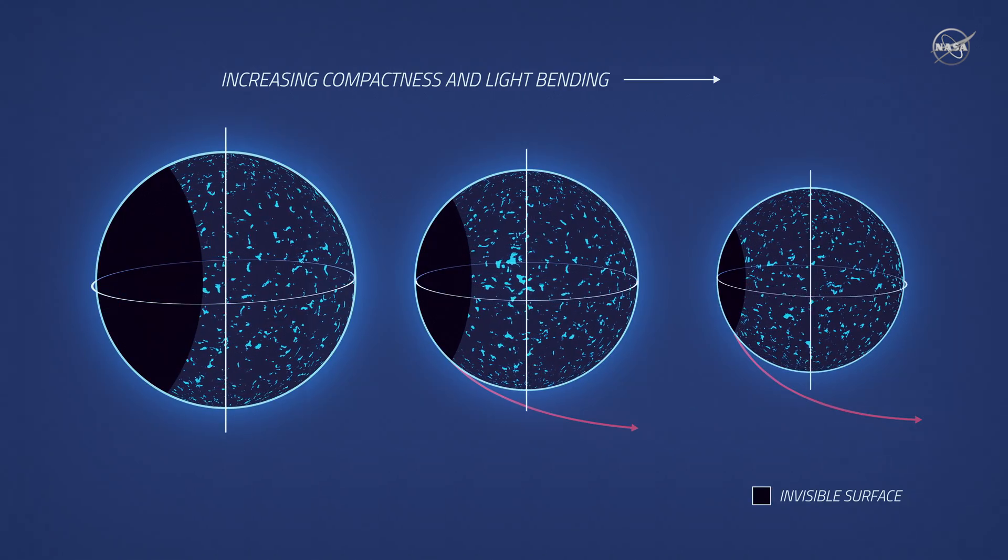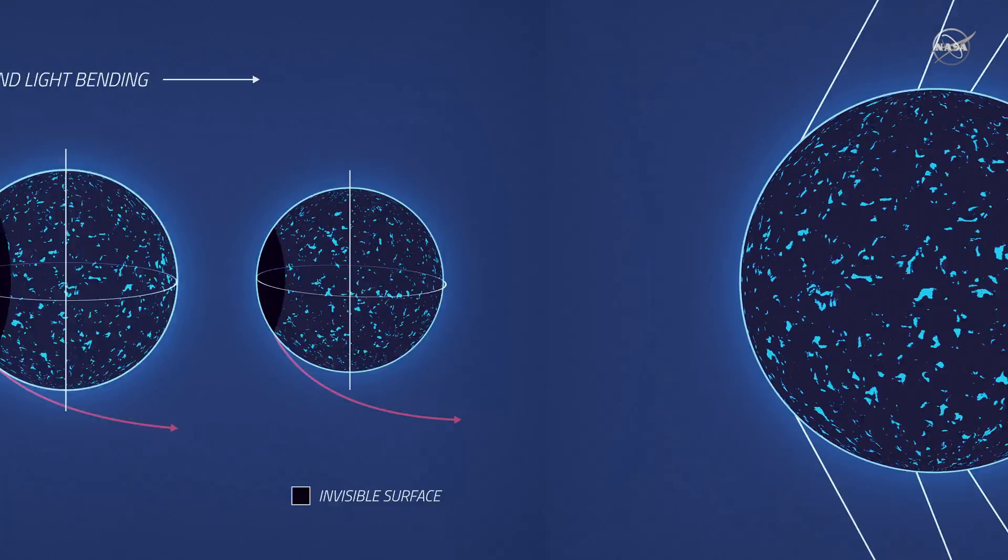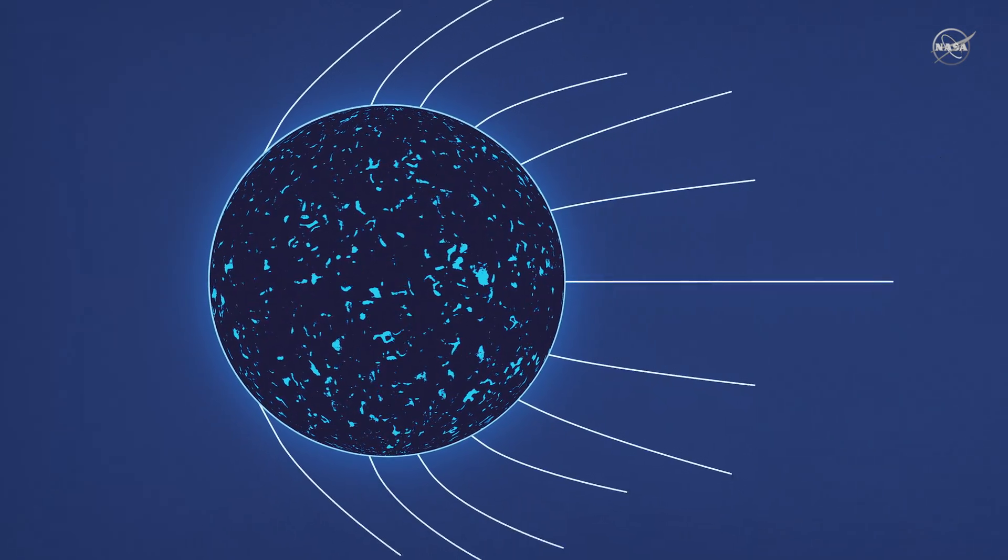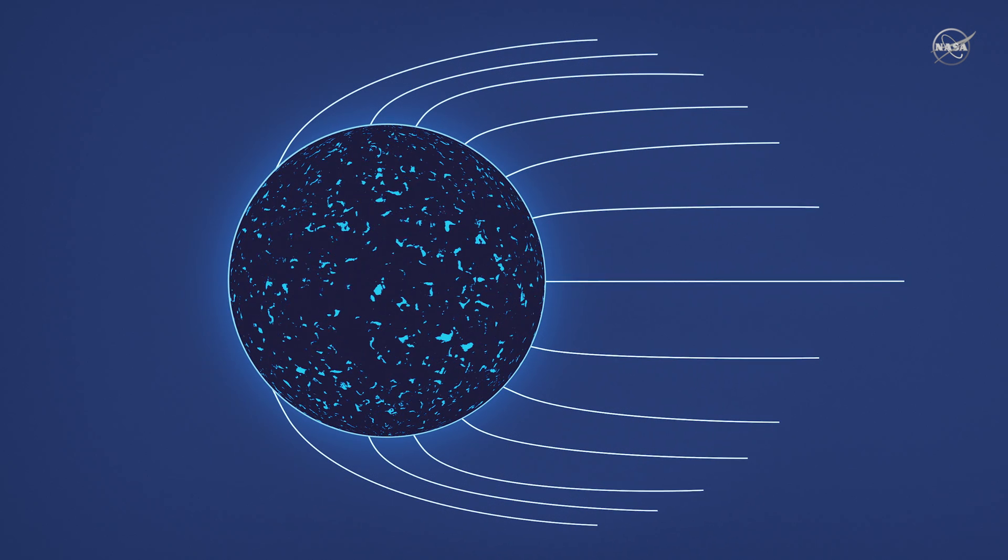Because neutron stars pack so much mass into such a tiny volume, they produce gravity strong enough to bend the light they emit, distorting their appearance in a way that enables the mass and size of the star to be measured.